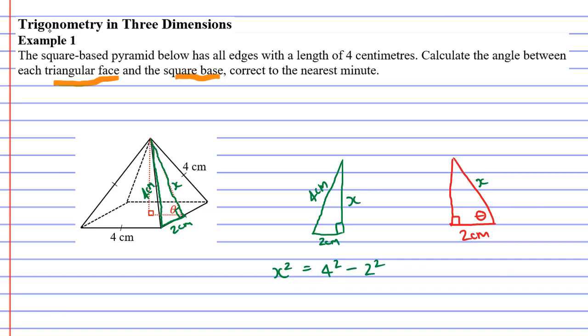And the reason we're subtracting this is because we already know what the hypotenuse is and we're finding the length of a shorter side. So when it's a shorter side, you need to subtract the square of each side.